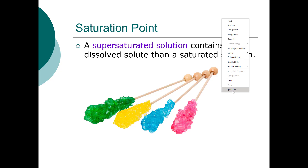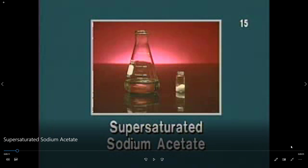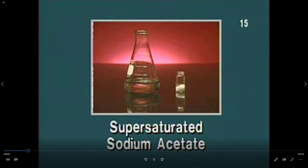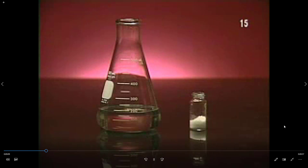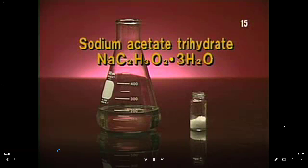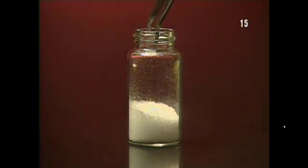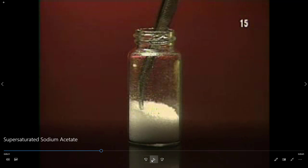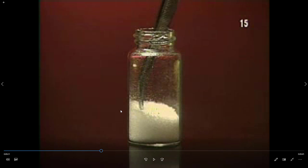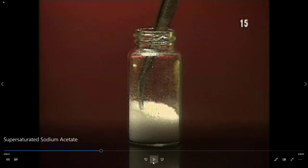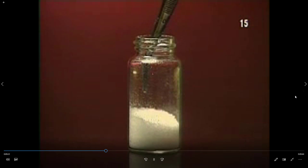When you add something for the crystals to grab onto, they start to form out of solution — that's how rock candy is made. Here's a video of 'hot ice,' a supersaturated solution of sodium acetate in water. The flask holds the supersaturated solution; as long as there's nothing for the crystals to grab onto, they stay dissolved and it looks like a regular solution. Then a small seed crystal of sodium acetate is added.